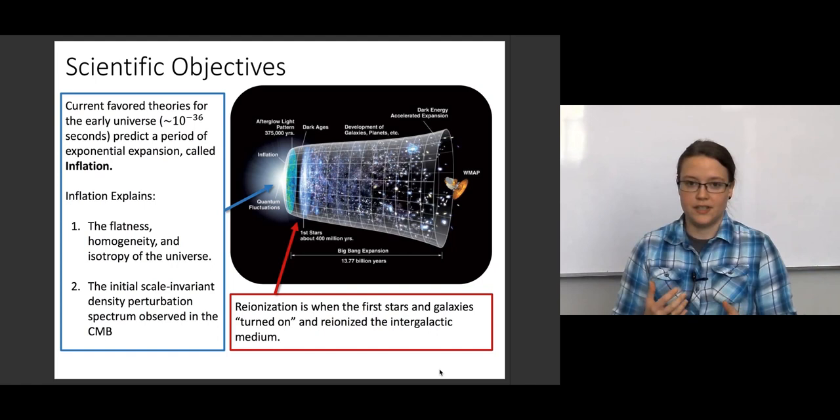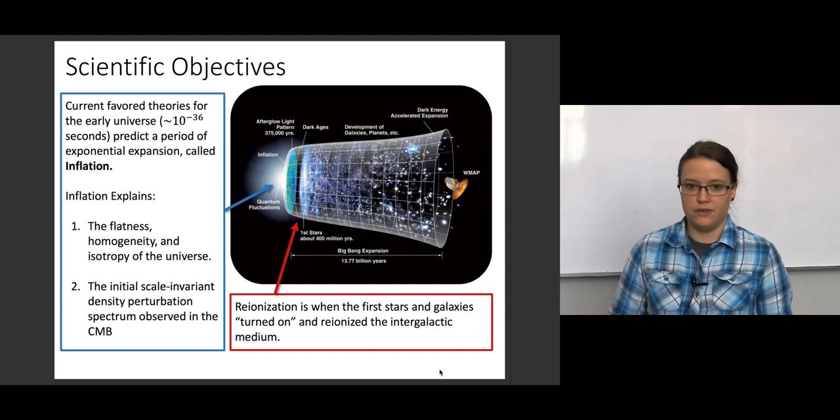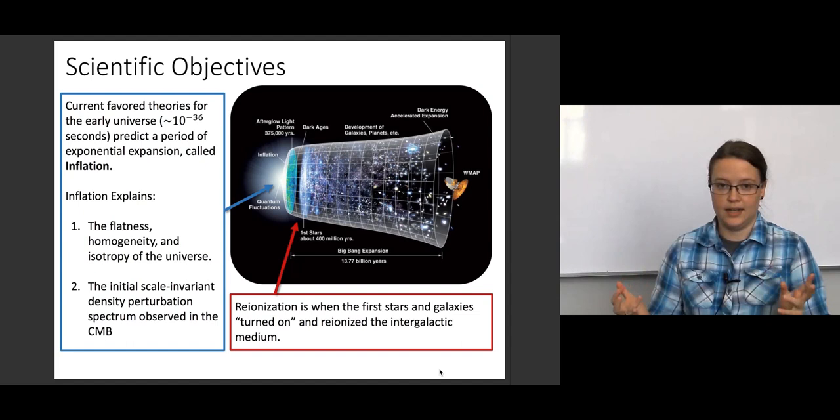The other era that we're looking at is reionization. This is when the first stars and galaxies in the universe turned on and started emitting ionizing photons into the universe. And this took a bunch of all the neutral hydrogen that was there at the time and ionized it.